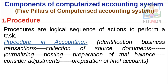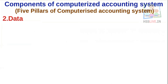For example, in accounting, the accountant enters the journal entry first — that is the book of prime entry. Then from the journal, the ledger is posted. Then the trial balance is prepared. This step-by-step flow is the procedure in a computerized accounting system.